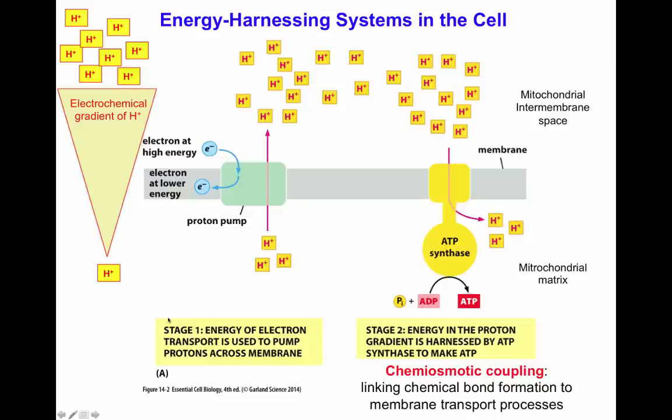The first stage of this reaction uses the energy of electron transport to pump protons across the membrane. The second stage involves the energy in the proton gradient being harnessed by ATP synthase to make ATP. That is the concept of chemiosmotic coupling — the linking of chemical bond formation to membrane transport proteins.